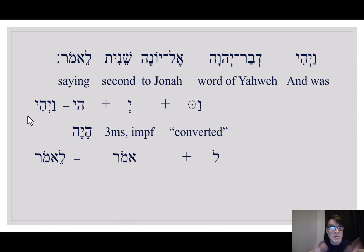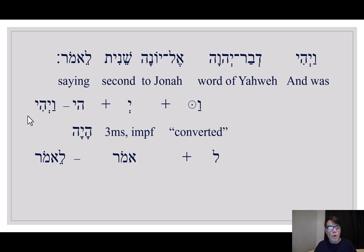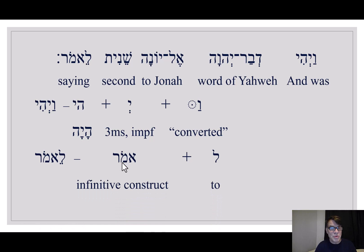I would just memorize this form. It's in Genesis 1: 'And God said, let there be light, and there was light' — 'Vayahi' or 'Yehi.' Now, 'Lamor' — what is this? It's Lamed, which means 'to,' plus 'amor.' Notice the holom after the second consonant. This is called an infinitive construct. When you have a preposition on a verb, it's probably an infinitive construct, and you translate it as 'to say' — though 'saying' works better. 'And it was, the second word of the Lord came to Jonah, saying' — that just works.